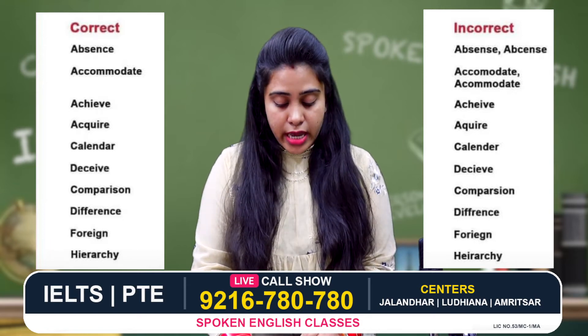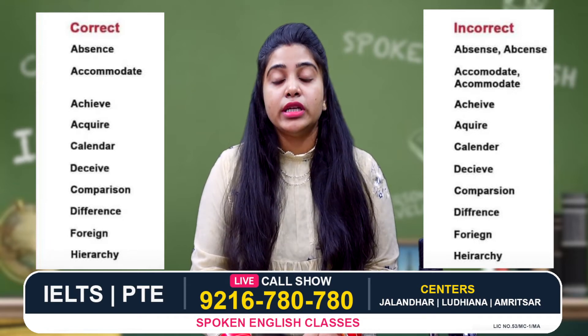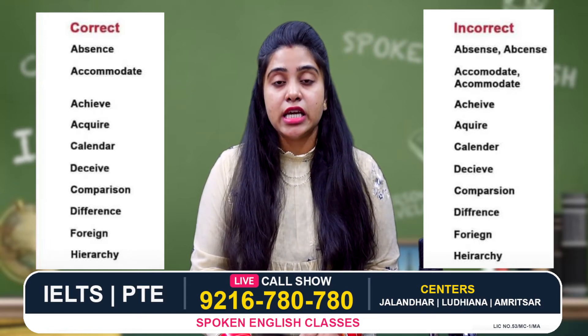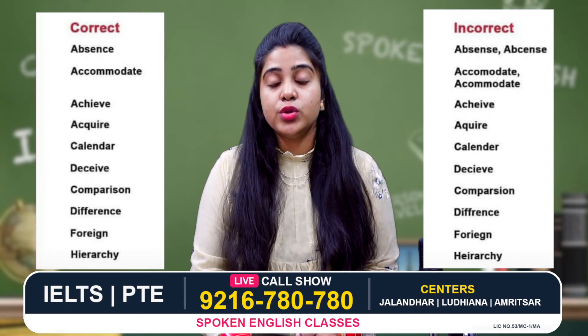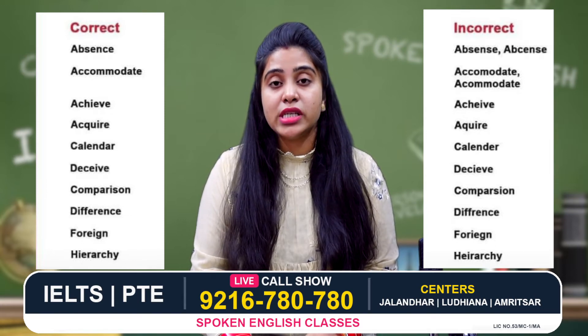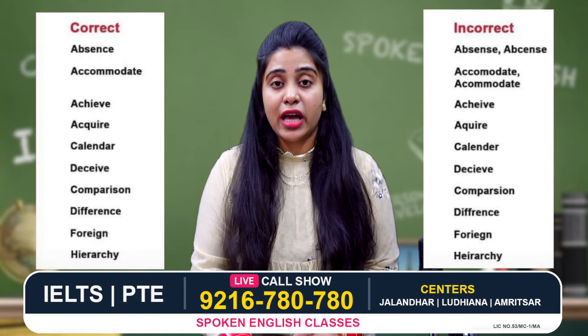The next word is 'acquire', with the correct spelling a, c, q, u, i, r, e. But students use a, c, u, i, r, e — dropping the 'q' — which is wrong.